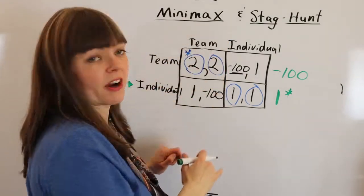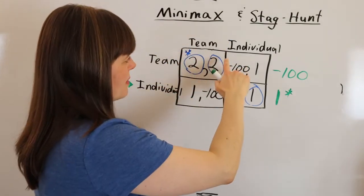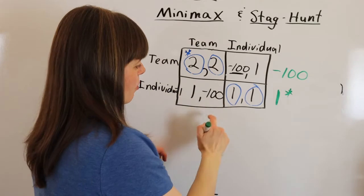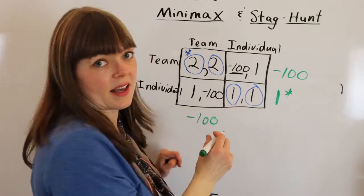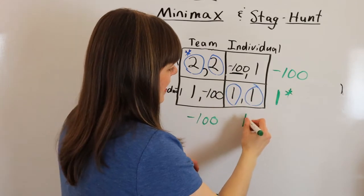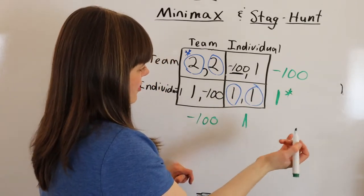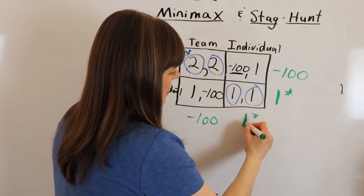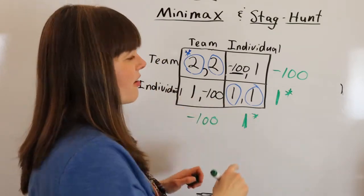And of course, player two is going to do the same thing as well. Player two says if I choose team, the worst that could happen is that I get negative 100. If I choose individual, the worst that could happen is that I get one. So they're going to recognize that the one is the best of the worst scenarios.